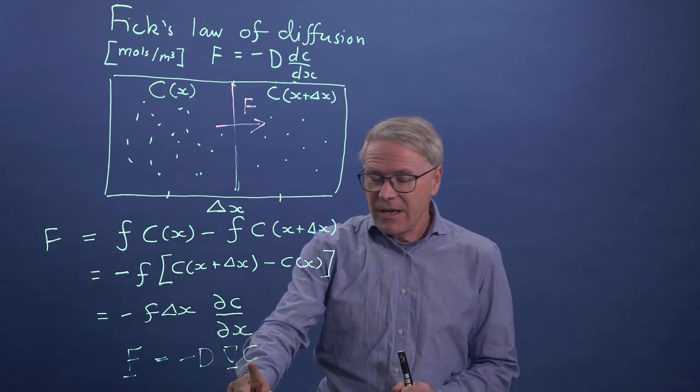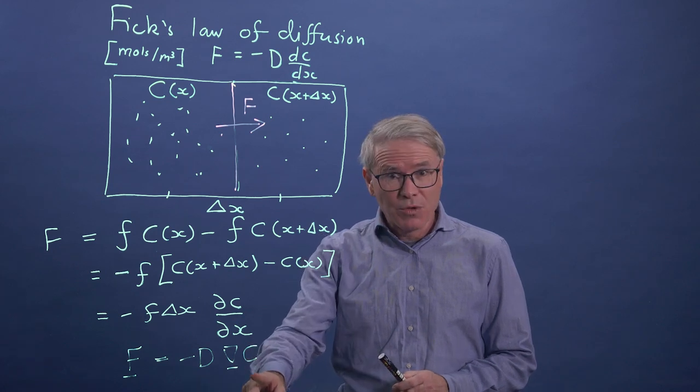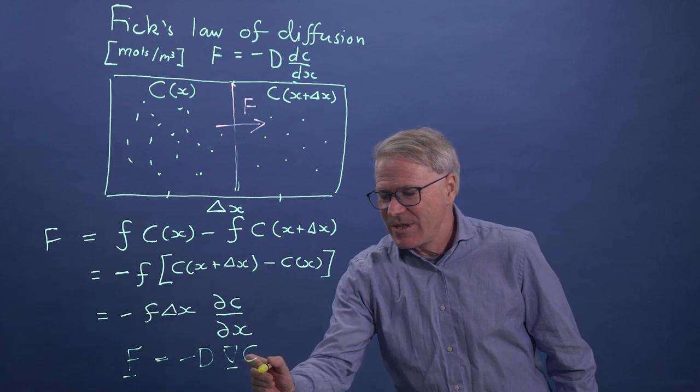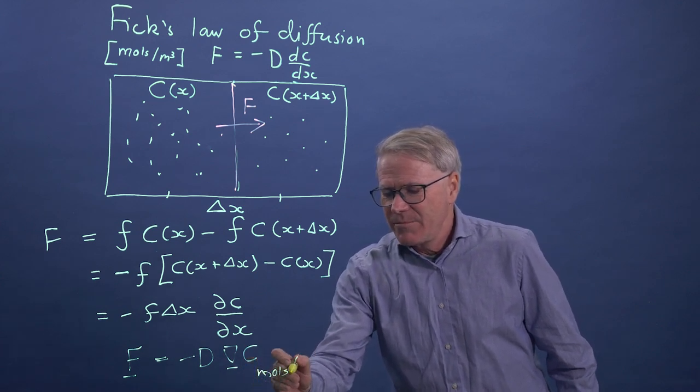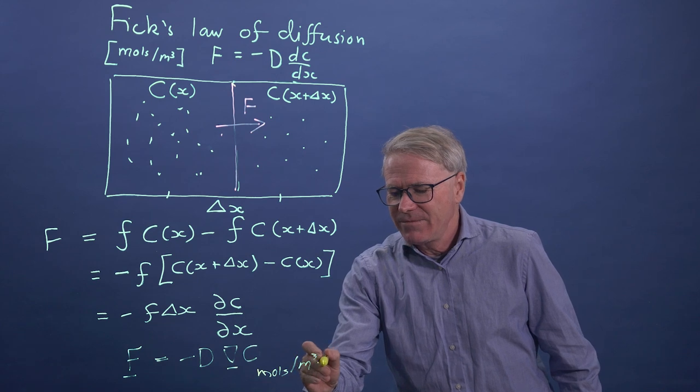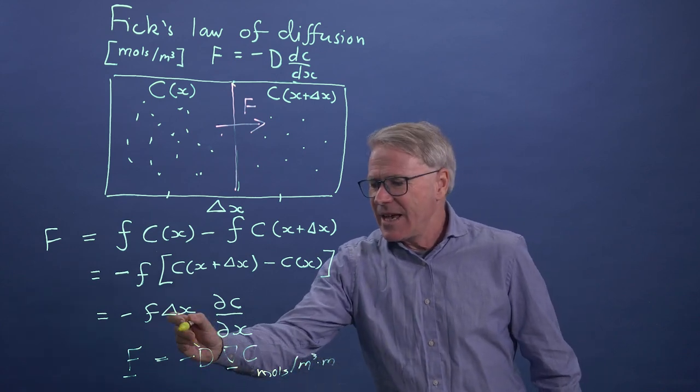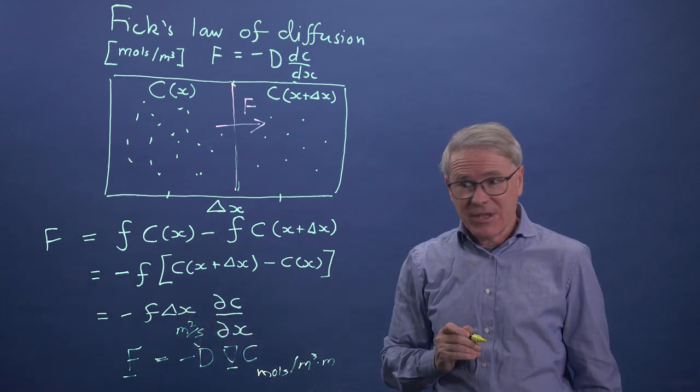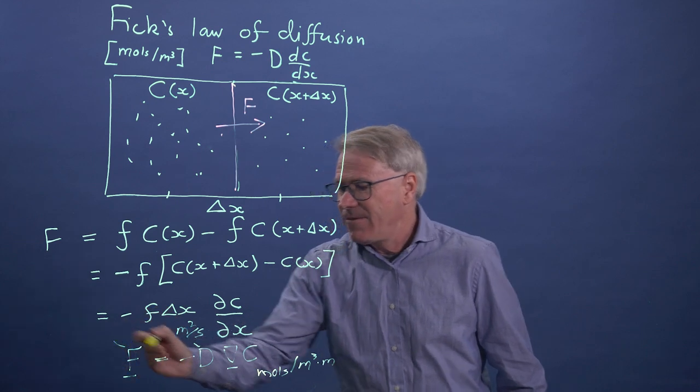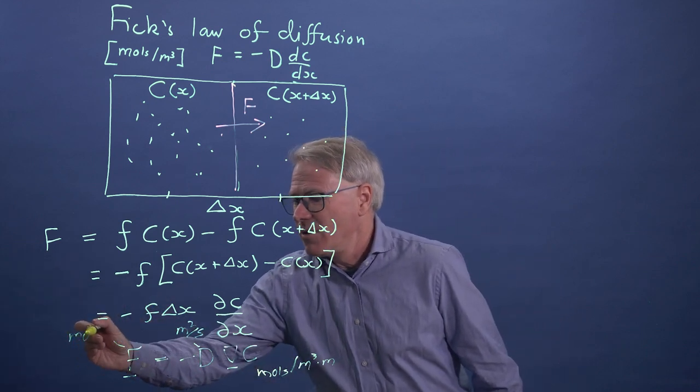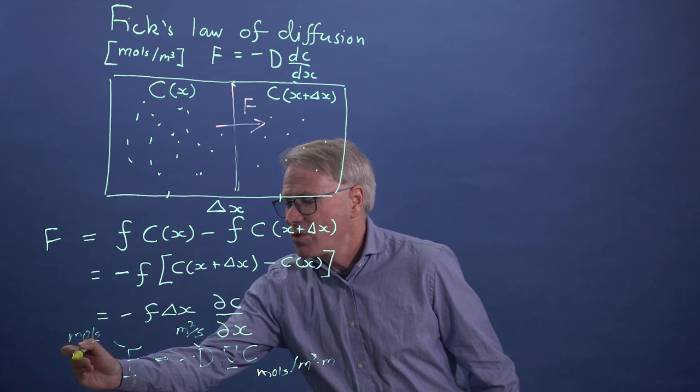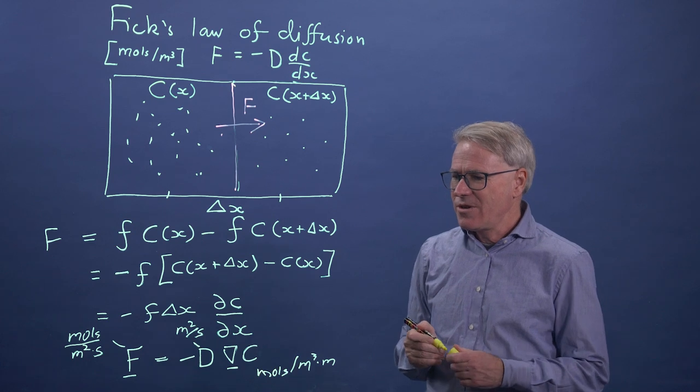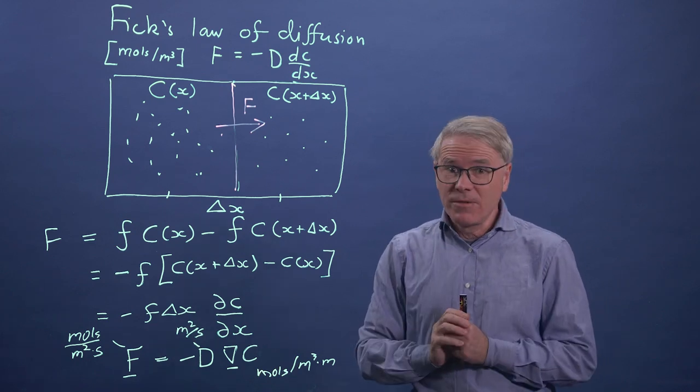So this is my concentration. This is measured in moles per cubic metre. This is a gradient, so the units of this is going to be moles per cubic metre, and then with another metre. D here is a diffusion coefficient, and its units are metres per second. And my flux, therefore, is the number of moles per square metre per unit time. So you can see the units all work out. So that's Fick's law of diffusion.